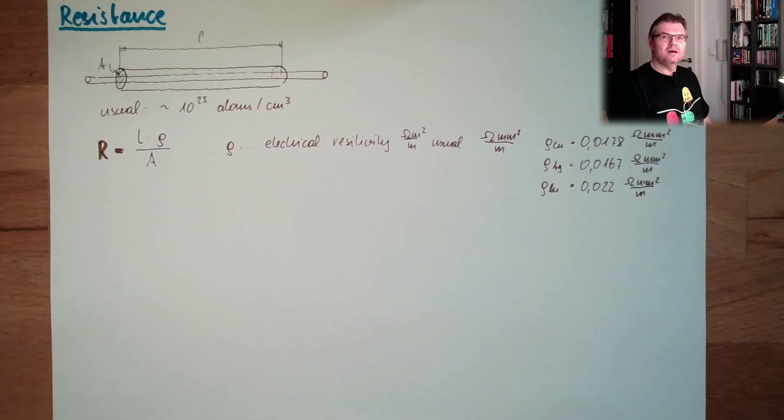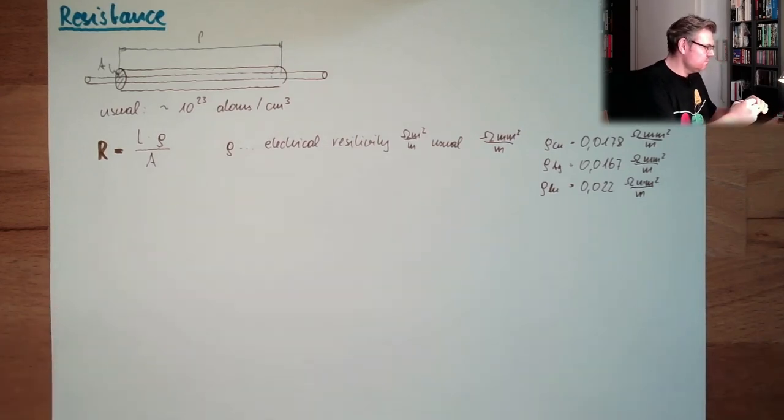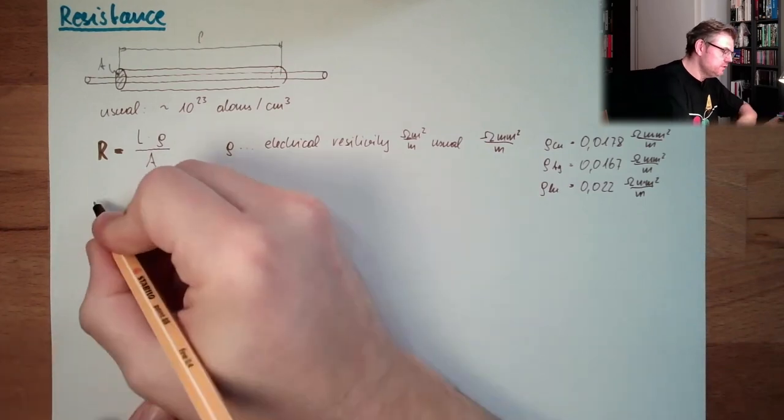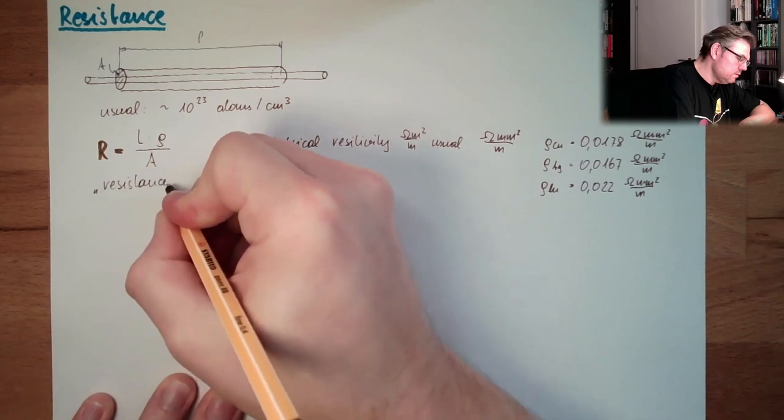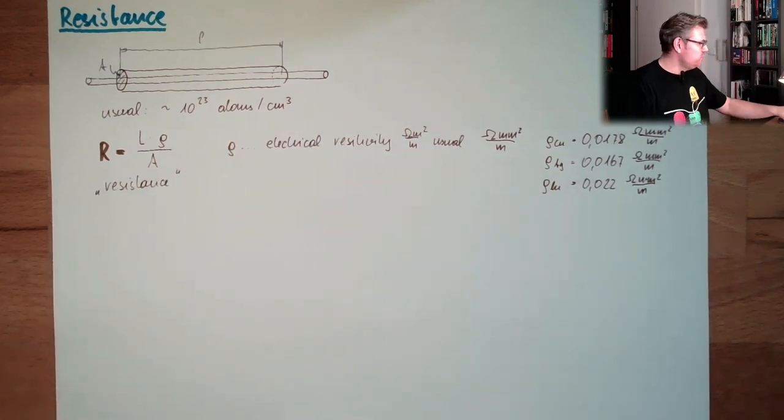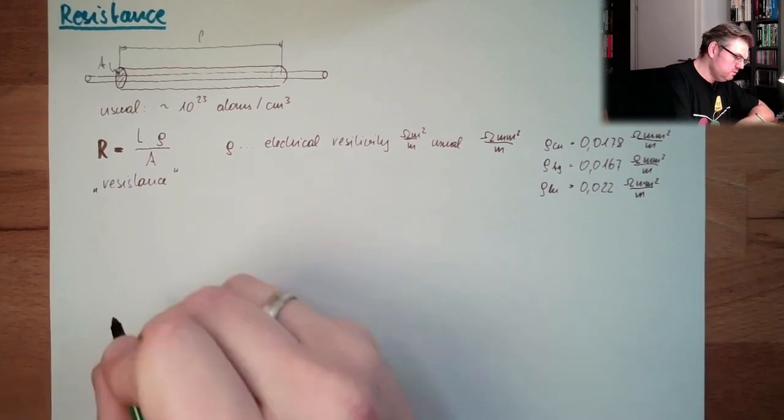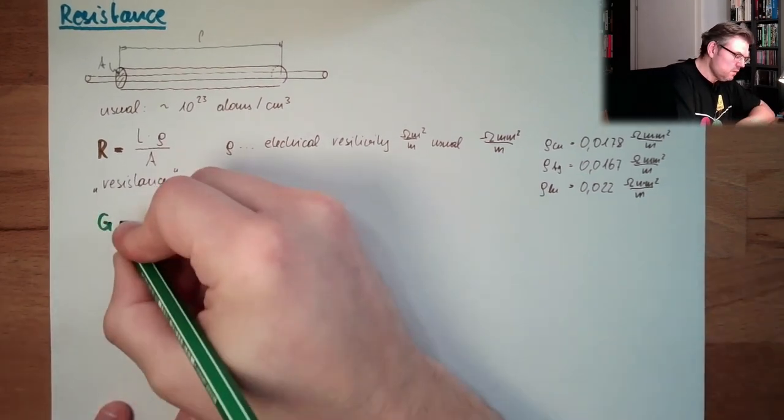Sometimes it's better to use not the resistance, but how good. So not telling how bad it is working, telling how good it is working. This thing is called conductance. So this is the resistance. And then we also have G. We call G. And this equals 1 divided by R.